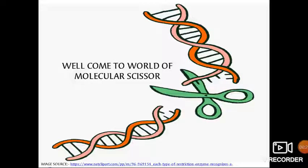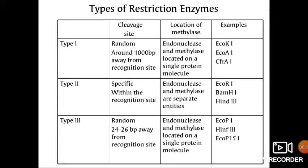We know that restriction enzymes are enzymes that cut specific DNA sequences. There are three types. Type 1 enzymes cut around a thousand base pairs away from the recognition site, and the same enzyme has both endonuclease and methylase activity — examples are EcoKI, EcoAI, and so on. Type 2 restriction enzymes cut within the recognition sequence.